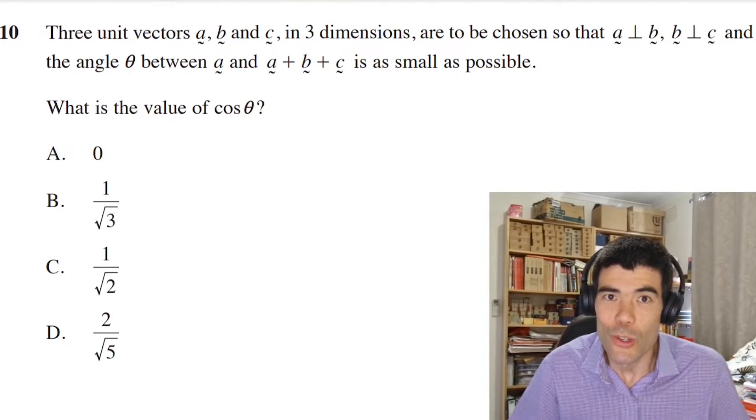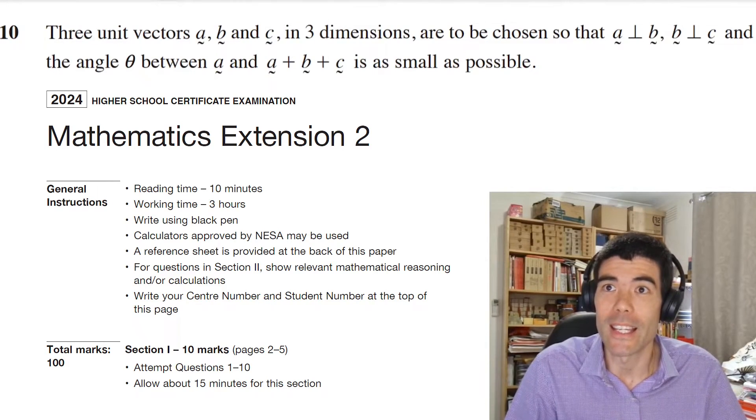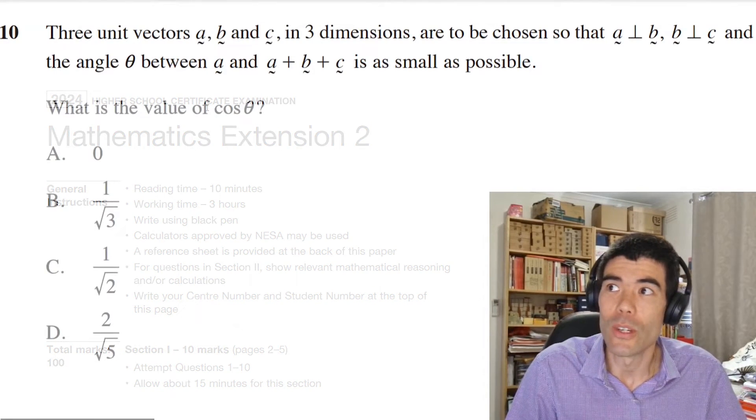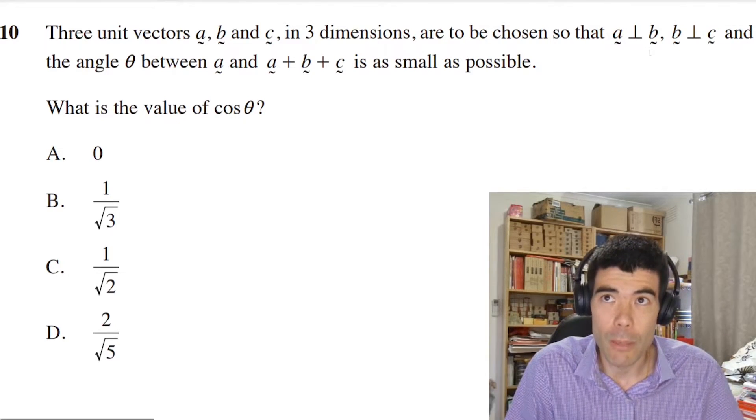This problem is the last multiple choice question from the Mathematics Extension 2 paper taken in New South Wales. Three unit vectors a, b, c in three dimensions are to be chosen so that a and b are perpendicular.